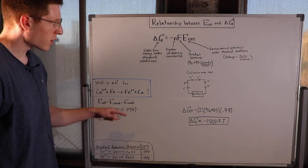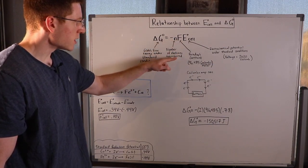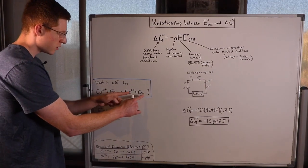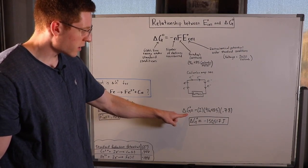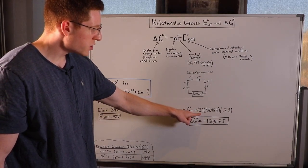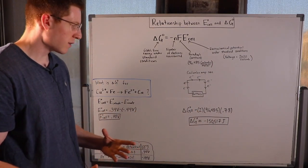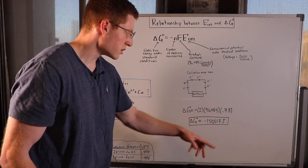So now we have our E-cell. We know Faraday's constant isn't going to change, and we know the number of electrons transferred was 2. Copper gained 2, and iron lost 2. So this is going to be delta G under standard conditions equals negative 2 times 96,485 times 0.78 volts, and you get your delta G-naught here. This is your answer in joules.